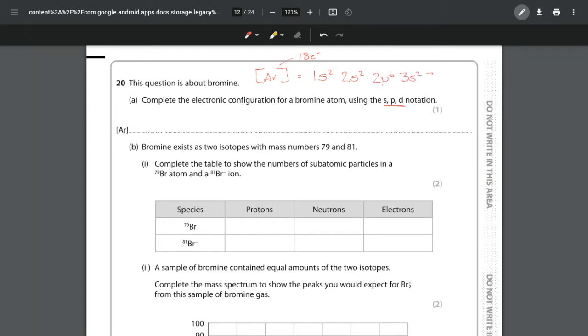Argon has 18 electrons: 1s² 2s² 2p⁶ 3s² 3p⁶. We don't need to write those since they are already given to us. For bromine, which has an atomic number of 35, we want to know what the electron arrangement is after the 3p⁶.